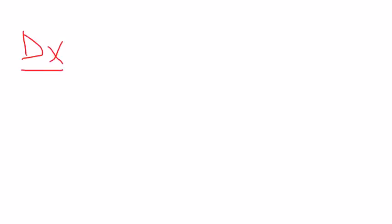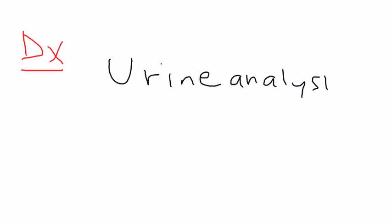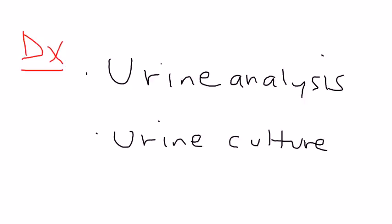Moving on to diagnostic testing — you're convinced that a young woman coming in with fever, urinary symptoms, CVA tenderness, and flank pain has pyelonephritis. So what do you do? The urine analysis is probably the most common first step, and then you also need to do a urine culture to isolate the bug, which will help decide what kind of treatment to give.